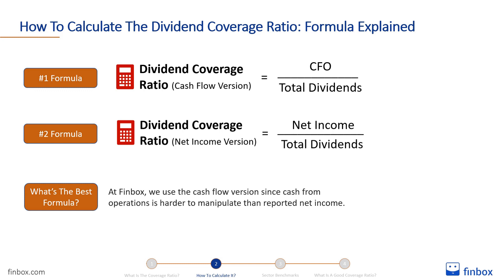At Finbox, we use the cash flow version, since cash from operations is harder to manipulate than reported net income. Furthermore, it is essential to check for cash flow profitability to get a more genuine sense of a company's ability to handle the dividend with ease. The pressure on management to consistently deliver strong earnings is real and well documented as earnings management. Net income may govern stock price reactions, but income investors need to be confident that a company has the cash flow to pay its dividend.